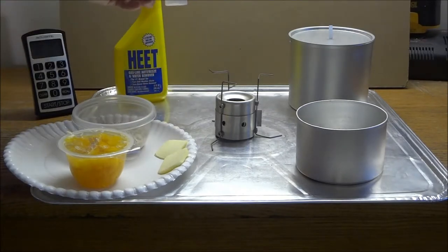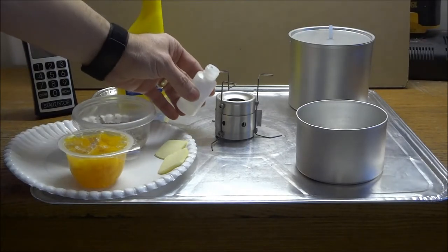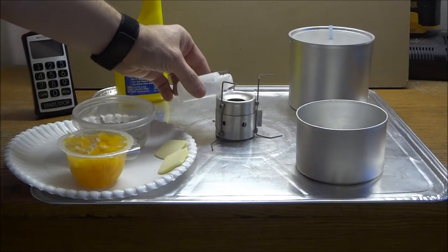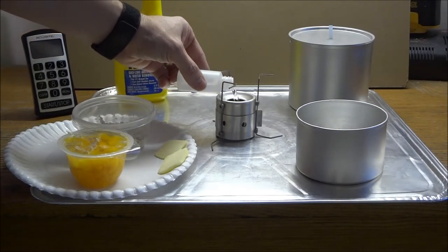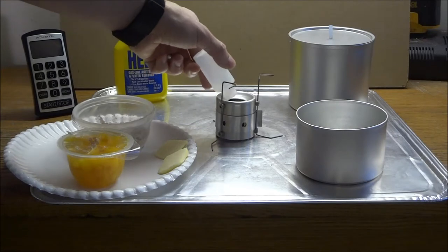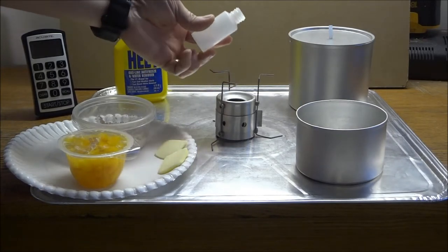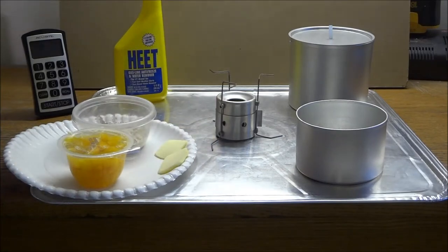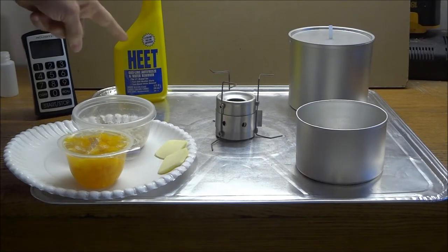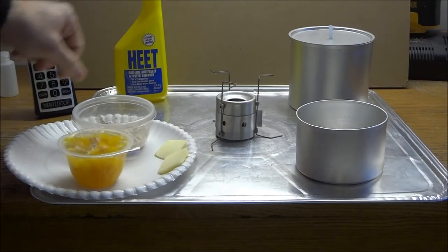I have a one ounce fuel bottle and we are going to be putting one ounce in here. Inside the stove is a carbon felt wick. One ounce just completely saturates the wick and leaves a little bit of liquid on top. That is the one ounce mark. We are going to be using heat. One ounce.